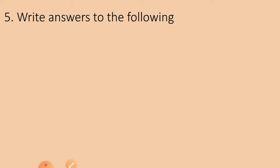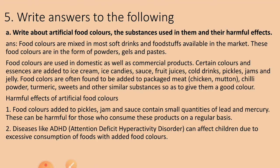Question number 5: write detailed answers to the following. A: Write about artificial food colors, substances using them and their harmful effects. Answer: Food colors are mixed in most soft drinks and foodstuffs available in the market. These food colors are in the form of powders, gels and paste. Food colors are used in domestic as well as commercial products.